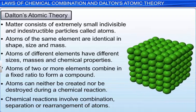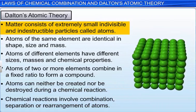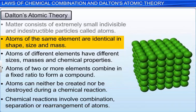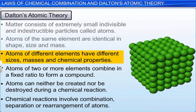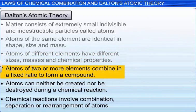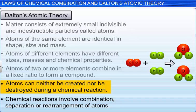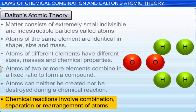The theory states that matter consists of extremely small indivisible and indestructible particles called atoms. Atoms of the same element are identical in shape, size and mass. Atoms of different elements have different sizes, masses and chemical properties. Atoms of two or more elements combine in a fixed ratio to form a compound. Atoms can neither be created nor be destroyed during a chemical reaction. Chemical reactions involve combination, separation or rearrangement of atoms.